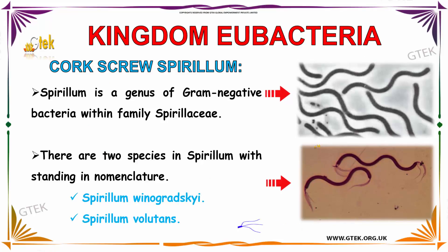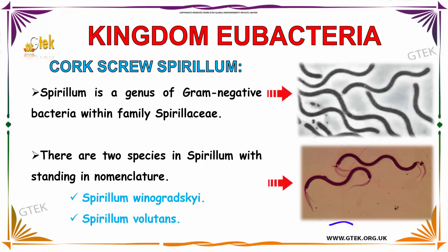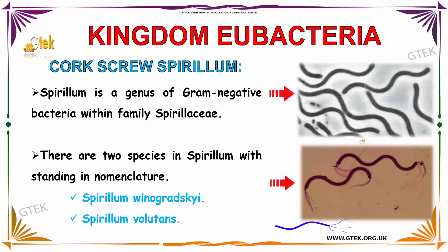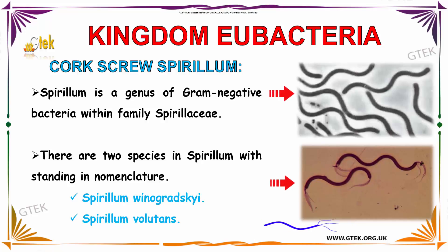Now we are going to see about corkscrew Spirillum. The Spirillum is a genus of gram-negative bacteria within the family Spirillaceae. There are two species in Spirillum with standing in nomenclature: the first one is Spirillum winogradskyi and the other one is Spirillum volutans.